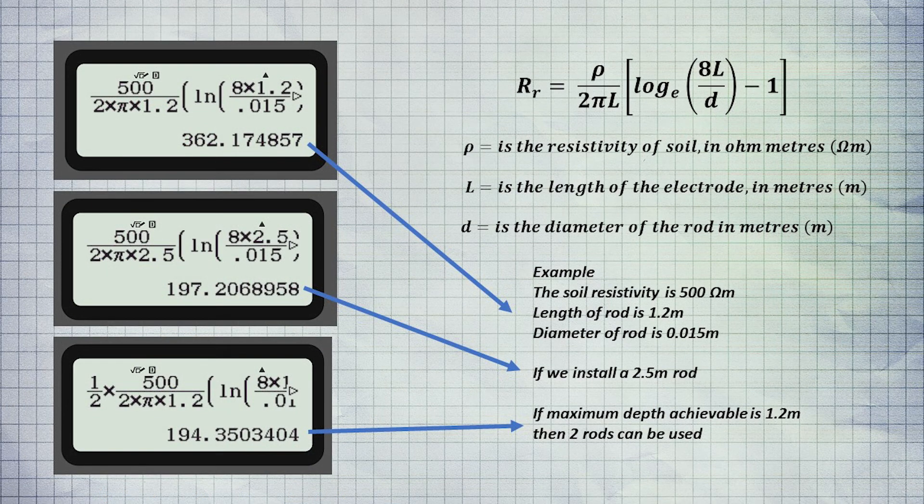This example is where the resistivity of the soil is 500 ohms per meter, and it can be seen the depth of rod is the best option to follow. If the required depth is not achievable, then multiple rods may be required.